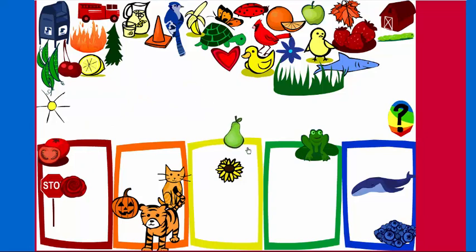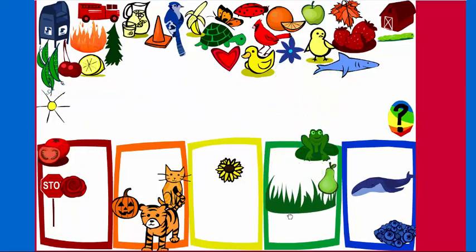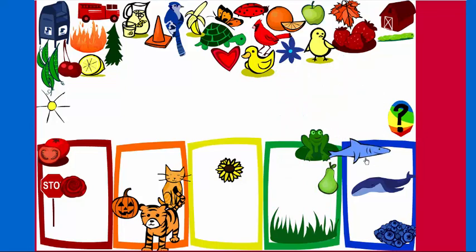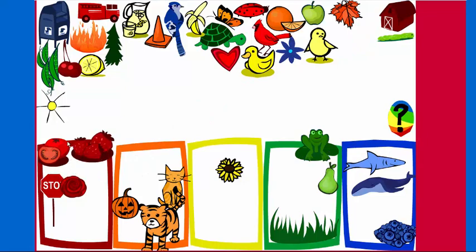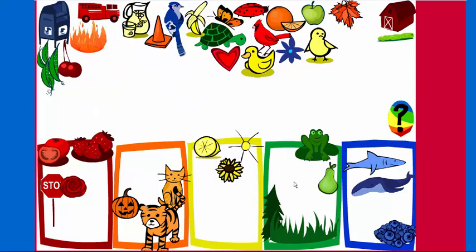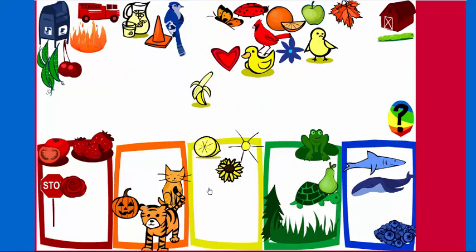Stop sign! Pear! Grass! Shark! Strawberries! Sun! Lemon! Pine tree! Turtle! Banana!